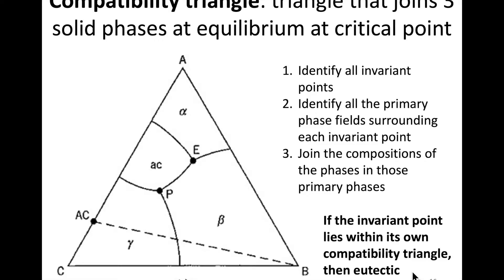Now we're going to talk about another feature of ternary phase diagrams known as compatibility triangles. Compatibility triangles, as they sound, are triangles, and they join three solid phases that are at equilibrium at a critical point. I'm going to walk you through how we find compatibility triangles for a given phase diagram.